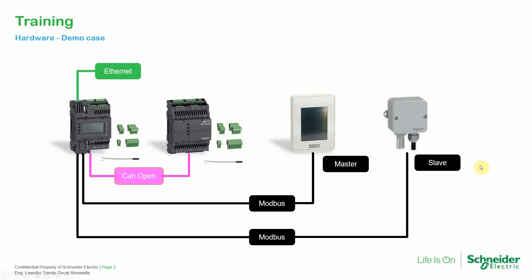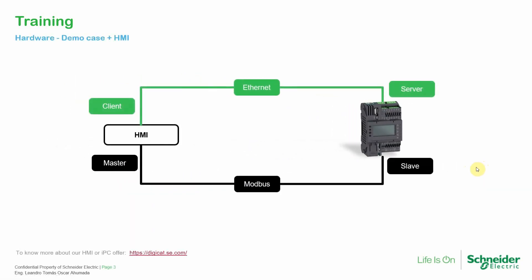What we're going to do with our demo case is use the Modbus port for the slave of the PLC to communicate to the HMI, where the HMI would be the master. Then for Ethernet communication we are going to use the HMI as a client and the PLC as a server.